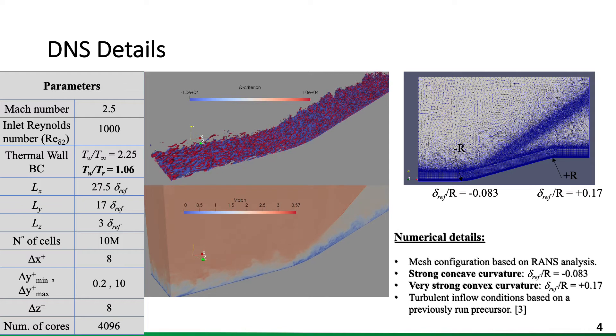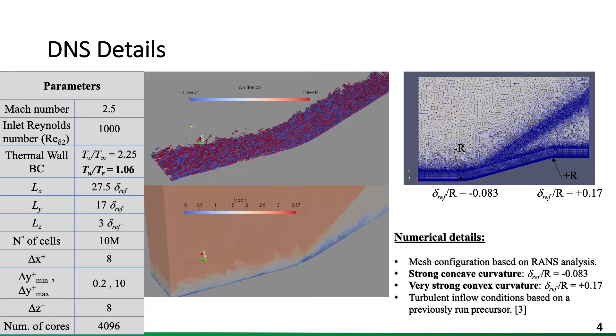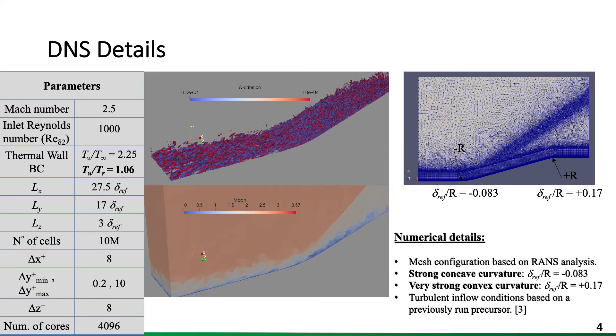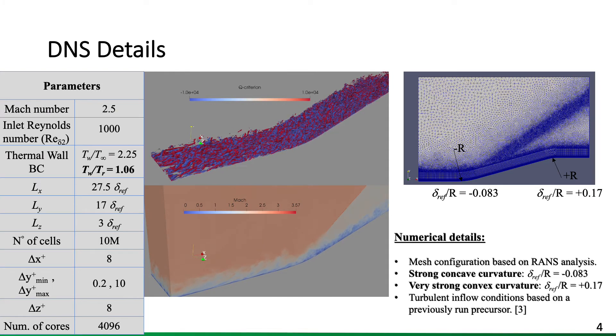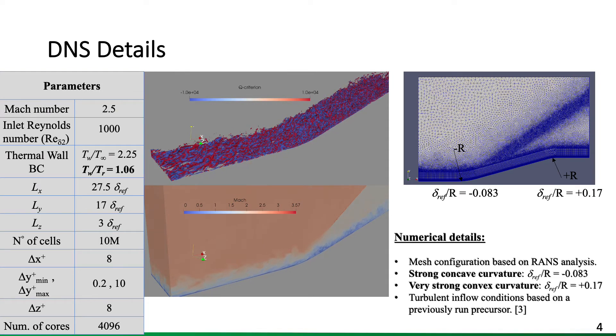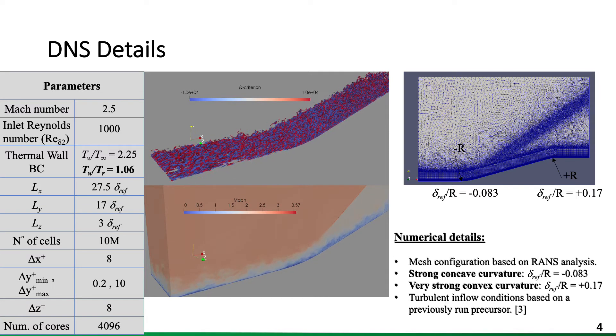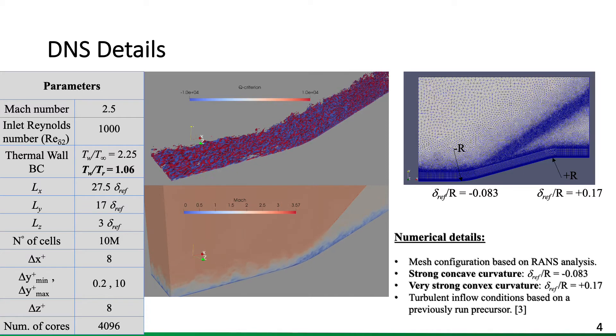The video and animation you're currently seeing shows the Q criterion just to illustrate regions of high deformation on the inlet and the concave portion and the ramp, which precedes the convex curvature. Also at the bottom, the instantaneous Mach number, just to illustrate instantaneous inflow conditions and the concave region.